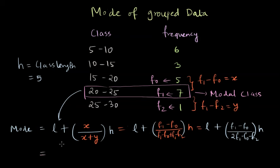So now let's compute mode for this particular example. The L in this case is 20 plus the value of X here, which is F1 minus F0 is seven minus five, which is two divided by, in the denominator we have X plus Y, Y is F1 minus F2, which is seven minus one, which is six times the length of the class, which is five.